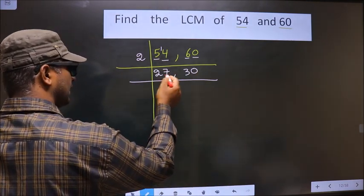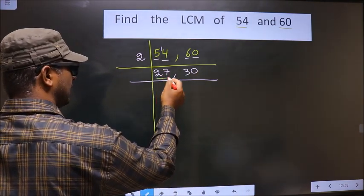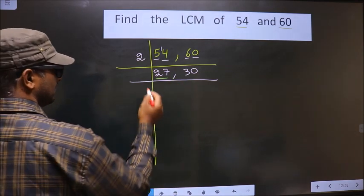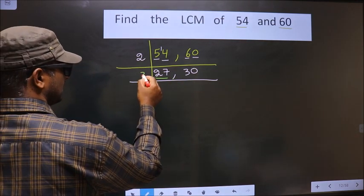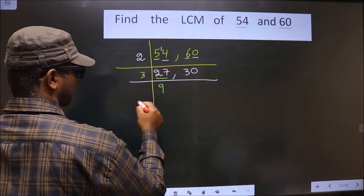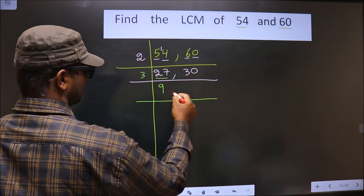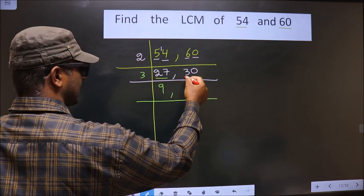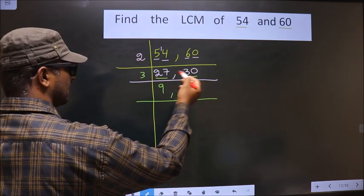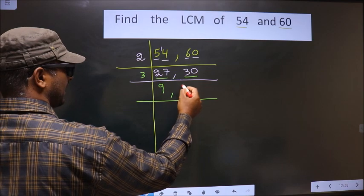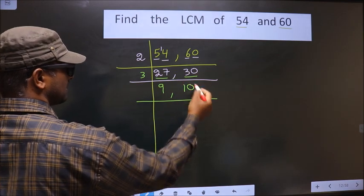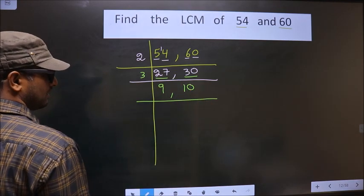Now here we have 27. 27 is nothing but 3×9. The second number is 30. 30 is divisible by 3, and we know that 3×10 is 30.